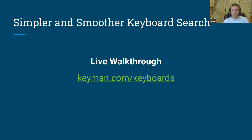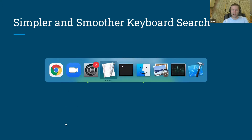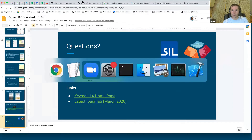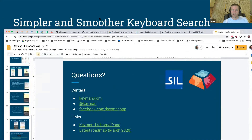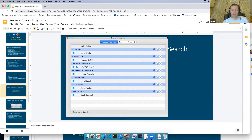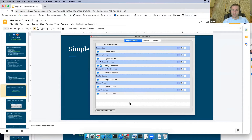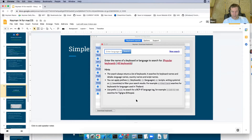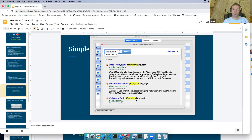I'll attempt a quick walkthrough of what the keyboard search looks like in Keyman for Mac. Switching to Keyman, we go to Keyman Configuration. We have a list of installed keyboards here, and I'm going to download another one. It's actually a web page and we can type in a search — let's go with Malayalam. You can see it's come up with a list of popular keyboards for Malayalam.